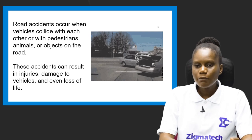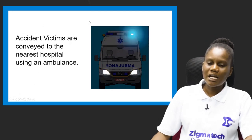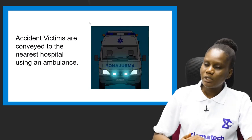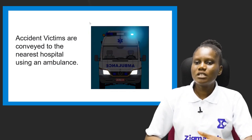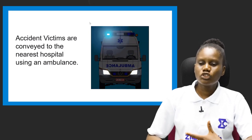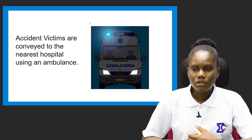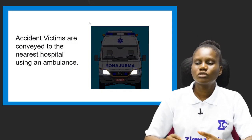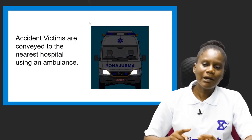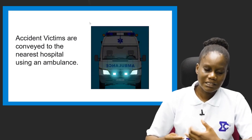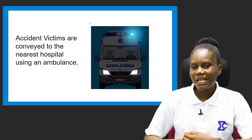Accidents can result in injuries, damage to vehicles, and even loss of life. Accident victims are conveyed to the nearest hospital using an ambulance. We use ambulances because these are emergency cases — if you use a normal vehicle you might not reach the hospital on time due to traffic. With the ambulance siren on, people know there is an emergency and give way, helping the victim reach the hospital in time.